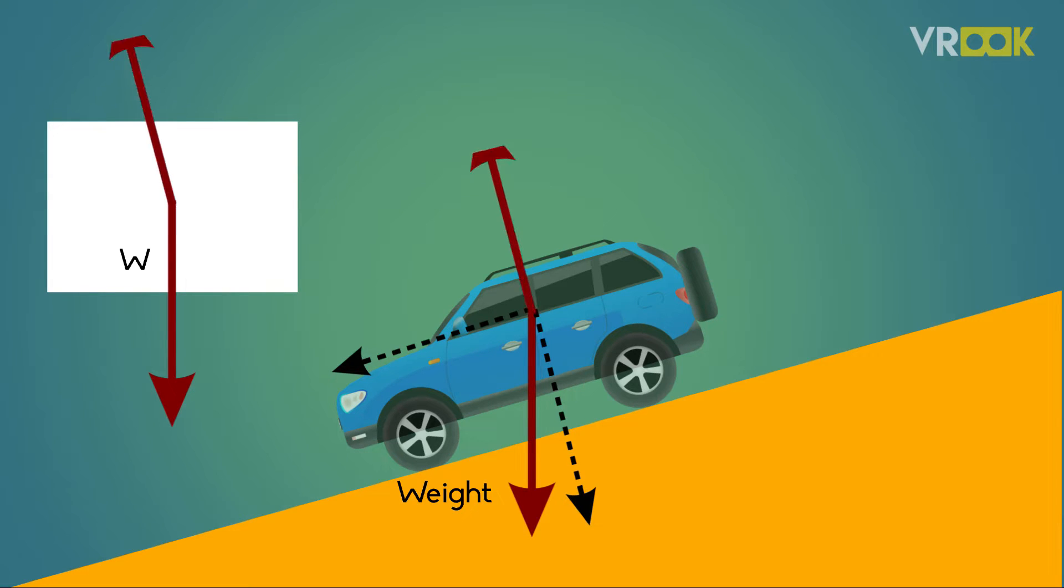There will be a normal reaction from the surface. There will be frictional forces which holds the car in that position. Now we have free body diagram of a car on the slope something like this.